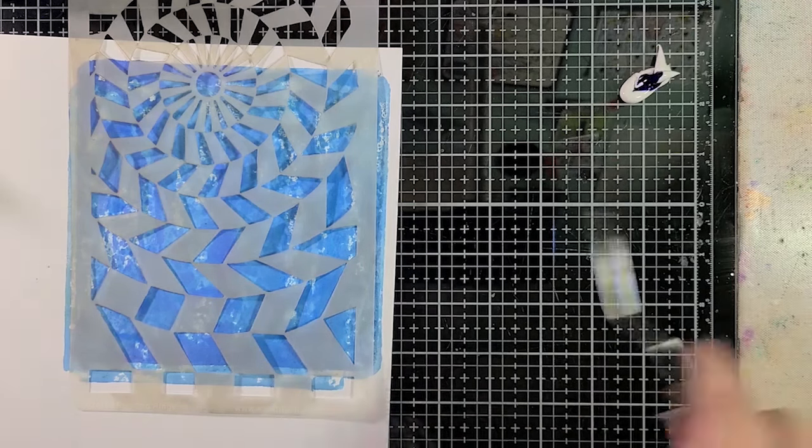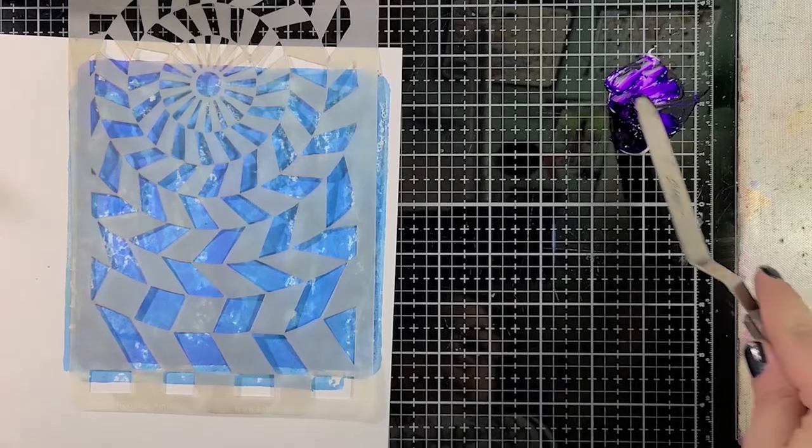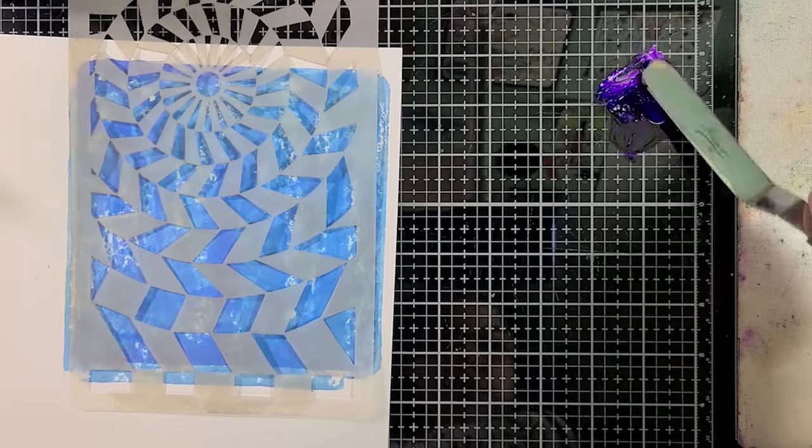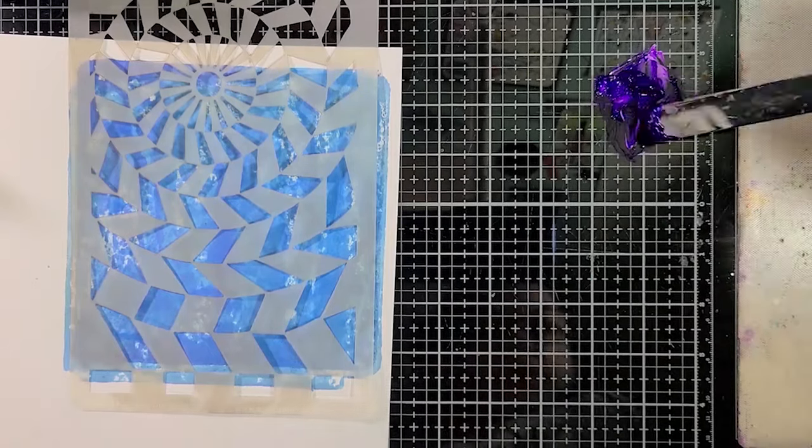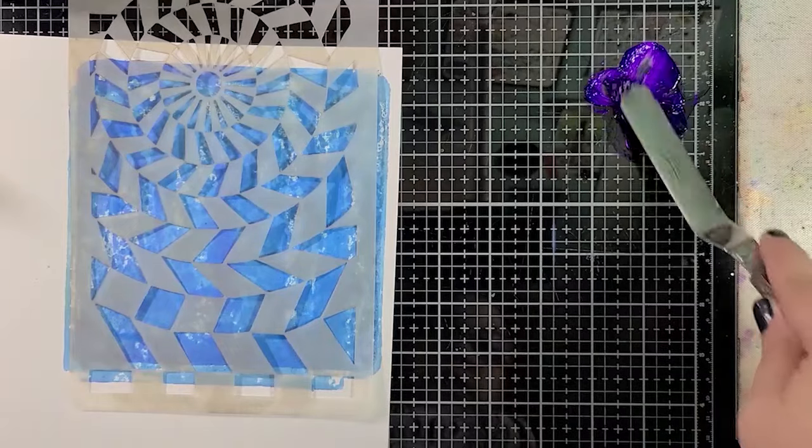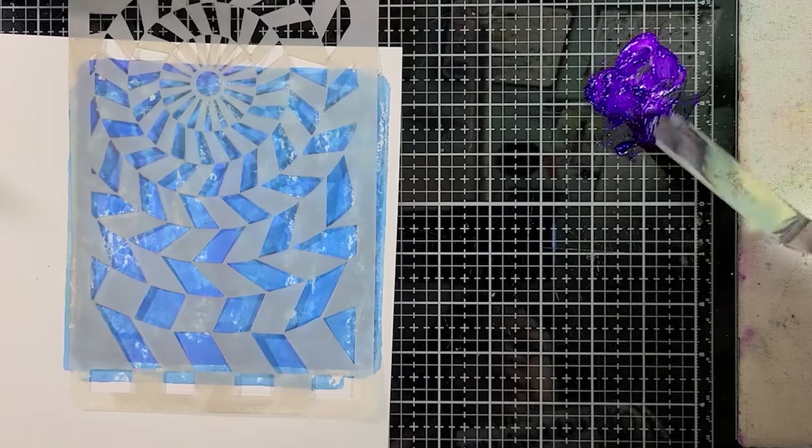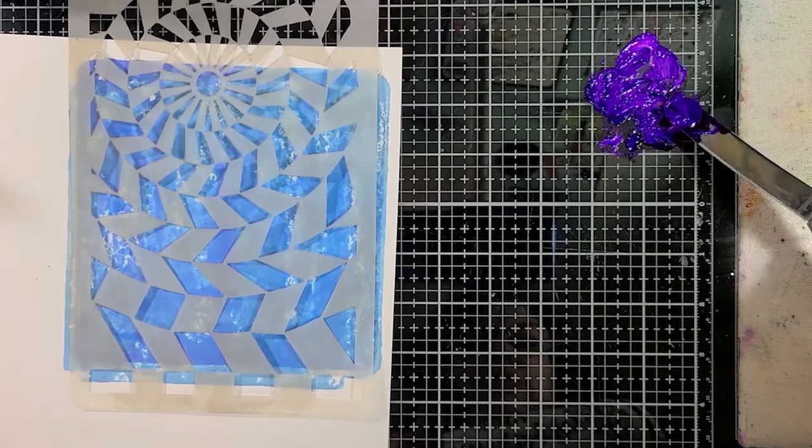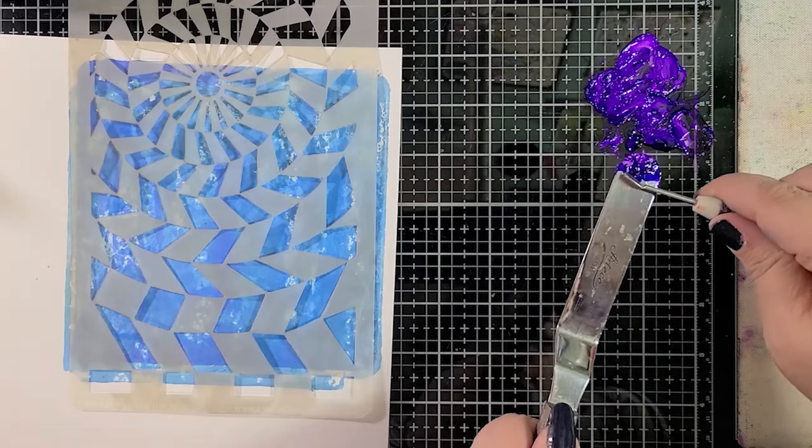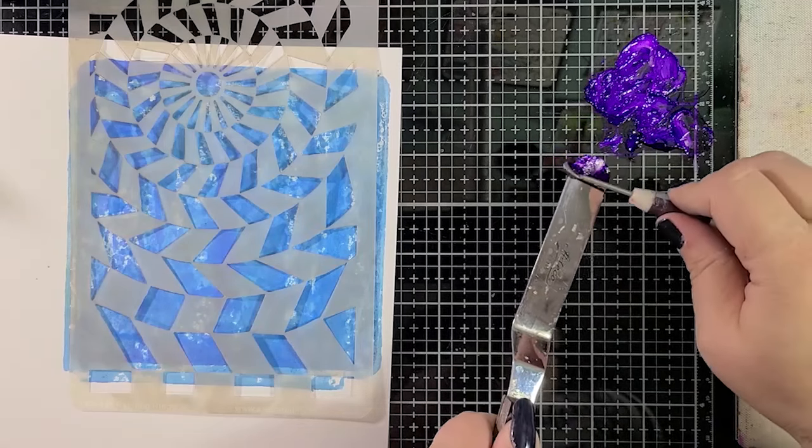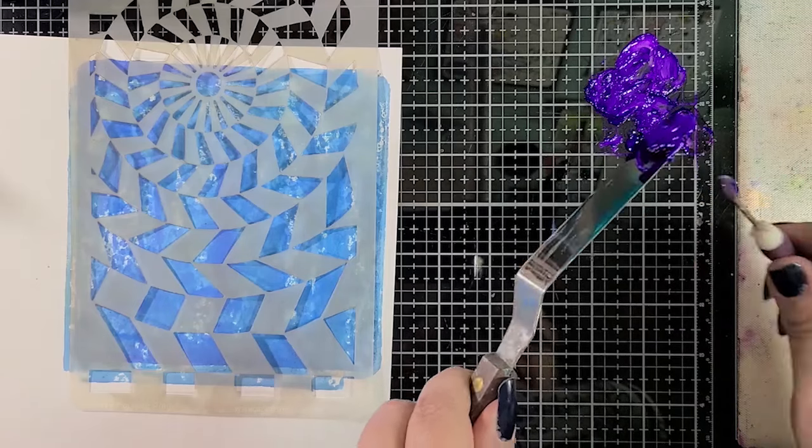And then I'm going to take my palette knife and mix that together. Now keep in mind this is a white paste so it's going to lighten up that color a bit. Might not lighten it too much. It's not going to make it pastel because I did put like three drops in here but it will lighten it a bit. And I actually don't mind that there's variation in color. I think that that makes it much more interesting. Scrape off some of that excess here so we don't waste it.